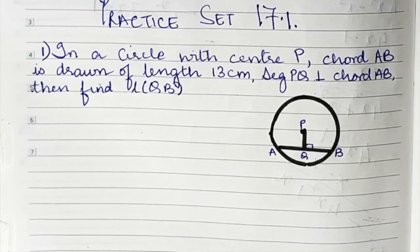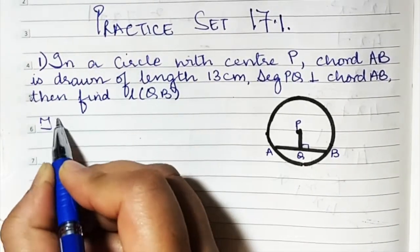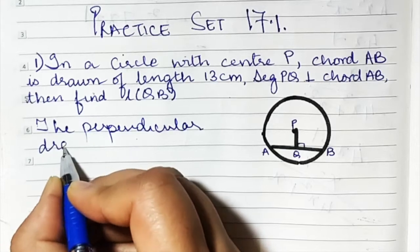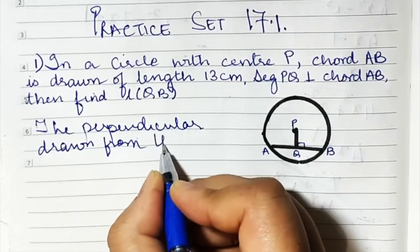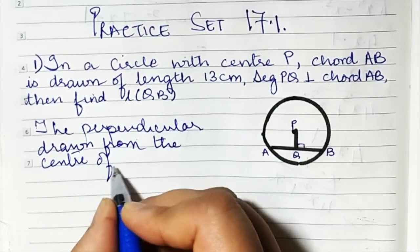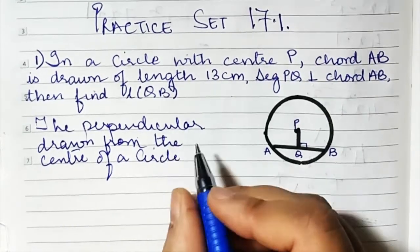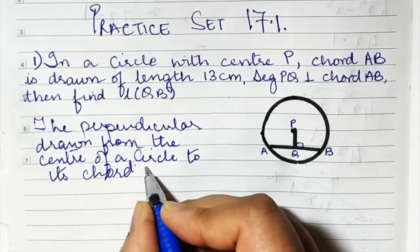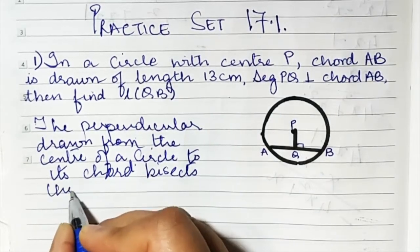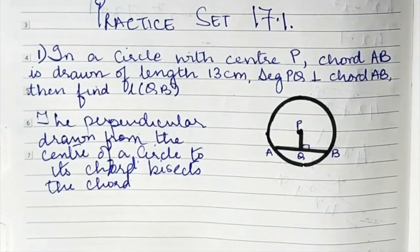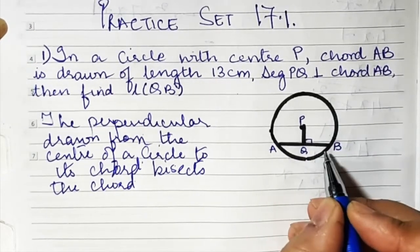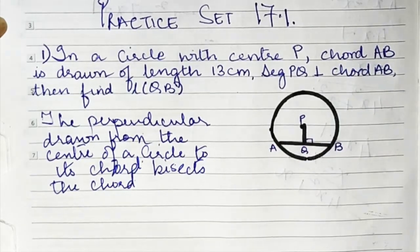Before solving, we need to know a key property: the perpendicular drawn from the center of a circle to its chord bisects the chord. So since PQ is perpendicular to AB, PQ is going to bisect AB — that means it divides AB into two equal halves.